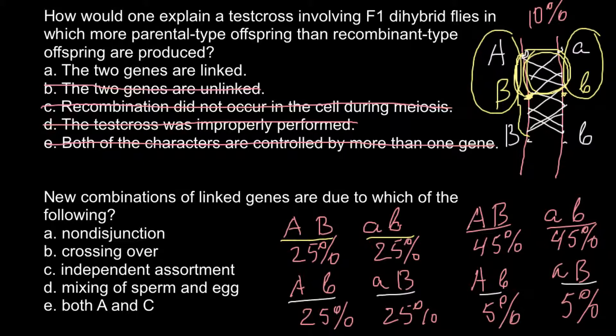Moving to the next question: new recombinants of linked genes are due to which of the following? Answer A: non-disjunction. Non-disjunction is what you can see, for example, in trisomy of chromosome 21, also called Down syndrome, when during meiosis two chromosomes due to non-disjunction end up in one gamete. When this gamete joins with another gamete to form a zygote, there would be one extra chromosome 21. This is how one can get Down syndrome, but this would not be recombination — it is just a whole extra chromosome. So we can cross out this answer.